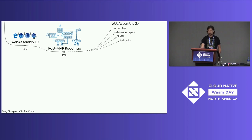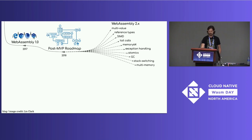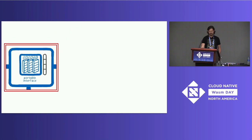A whole bunch of this work has been in progress in the WebAssembly CG, extending the core of WebAssembly with new instructions and value types. But if we look at one branch of the skill tree and zoom in, it says "portable interface" — so what's that about?